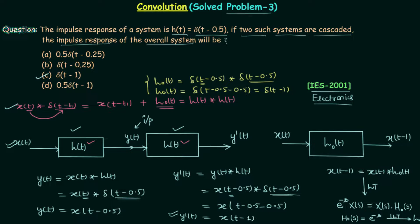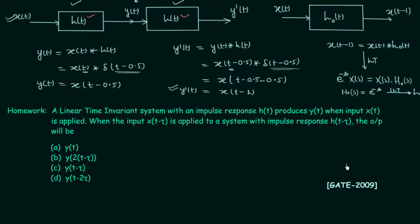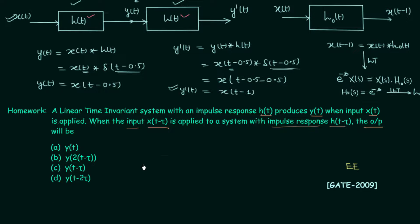The homework problem is taken from GATE 2009 Electrical Engineering paper. Here h(t) is the impulse response, y(t) is the output, and x(t) is the input of the system. You are required to find the output of the system when x(t - τ) is the input and h(t - τ) is the impulse response. There are four options — once you have the correct option, comment it below.